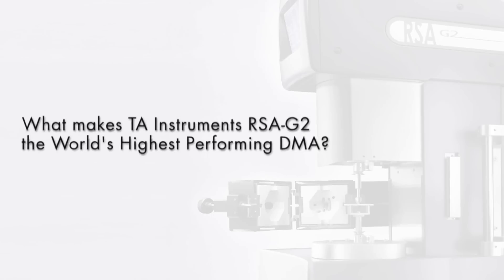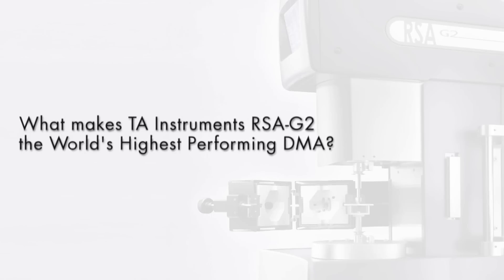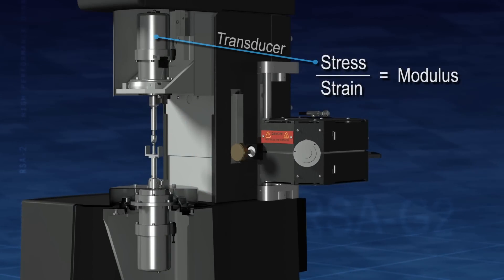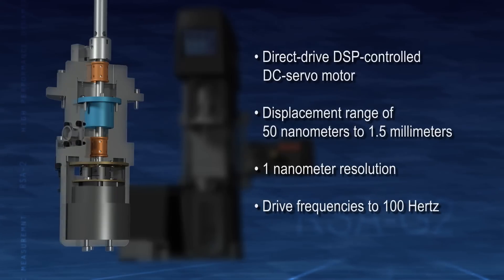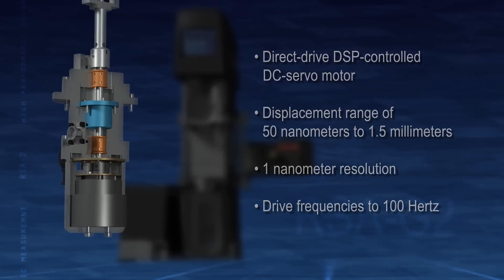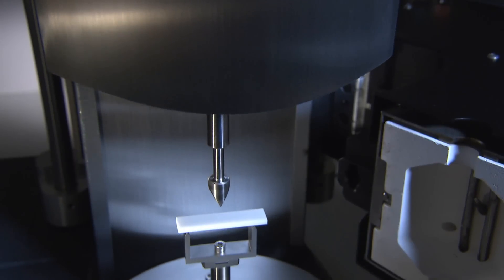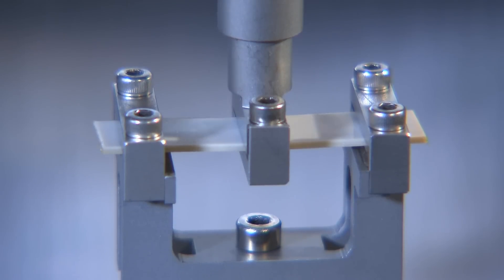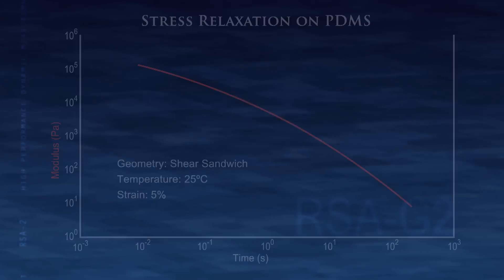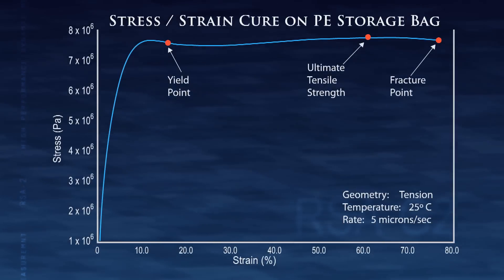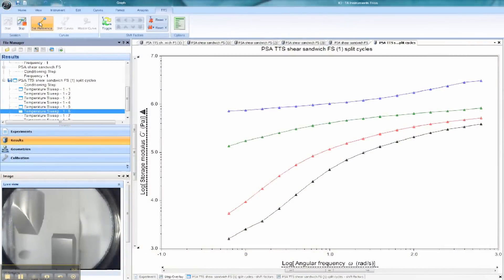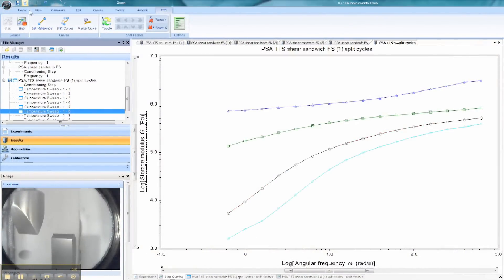What makes TA Instruments RSA-G2 the world's highest performing DMA? It's the separate motor and transducer technology. It's the superior design and wide specification ranges. It's the linear stepper motor drive. It's the forced convection oven with camera viewer. It's the wide range of clamping systems. It's the immersion testing system. It's the wide range of testing capabilities. It's DETA testing capabilities. And it's TRIOS software and flexible test programming.